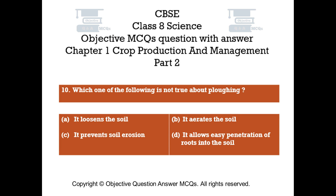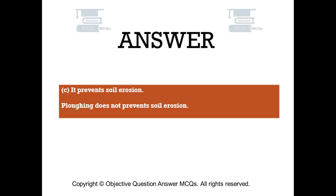Question number 10. Which one of the following is not true about plowing? Option A: It loosens the soil. Option B: It aerates the soil. Option C: It prevents soil erosion. Option D: It allows easy penetration of roots into the soil. The right answer is Option C. Plowing does not prevent soil erosion.